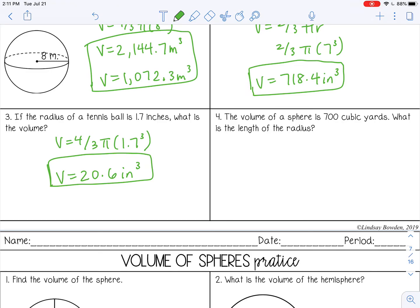Number four, the volume of a sphere is 700 cubic yards. What is the length of the radius? So here we're working backwards. We know the volume, and we're trying to work backwards to find the radius. So my volume is 700.